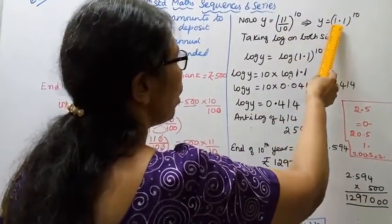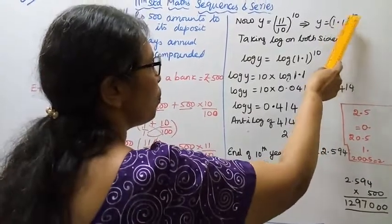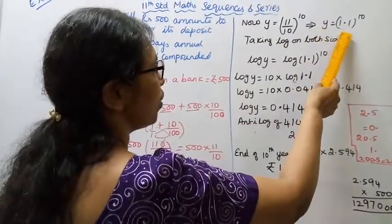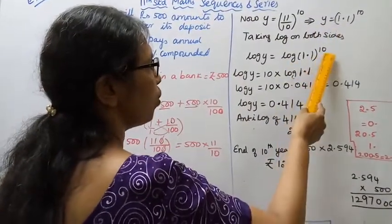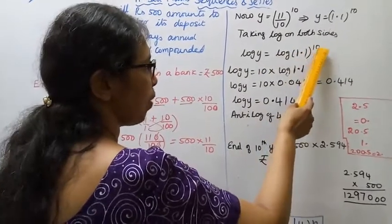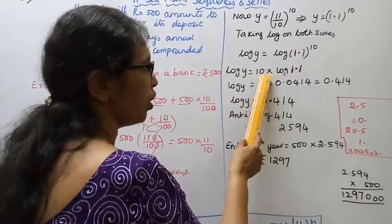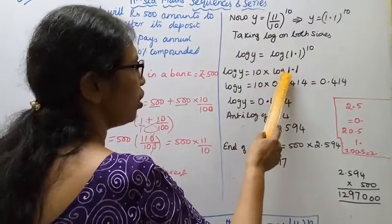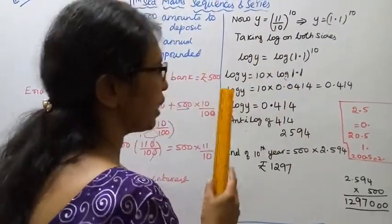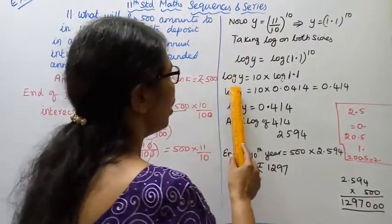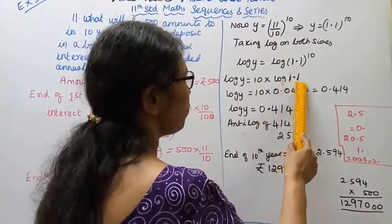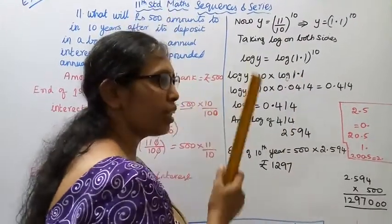Let y equal to (1.1) to the power 10. Taking log on both sides: log y equals log of (1.1) to the power 10. Applying the power rule of logarithms, log y equals 10 into log(1.1). We will use a log table to find log(1.1). So log y equals 10 into log(1.1).